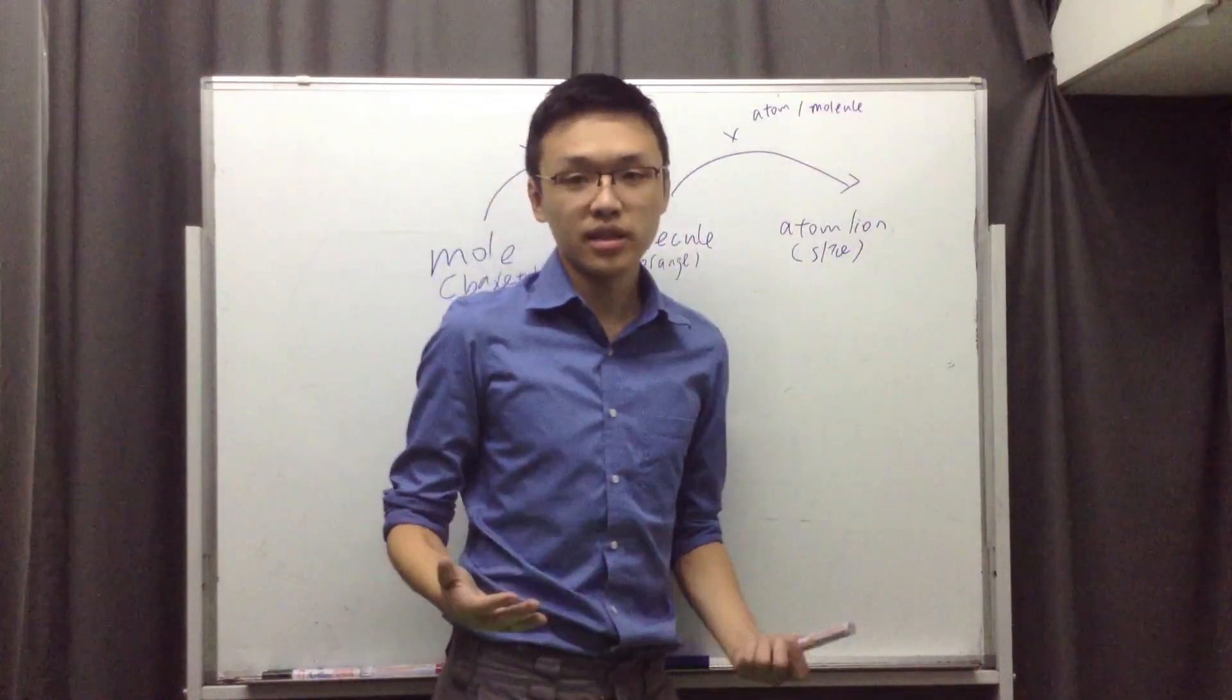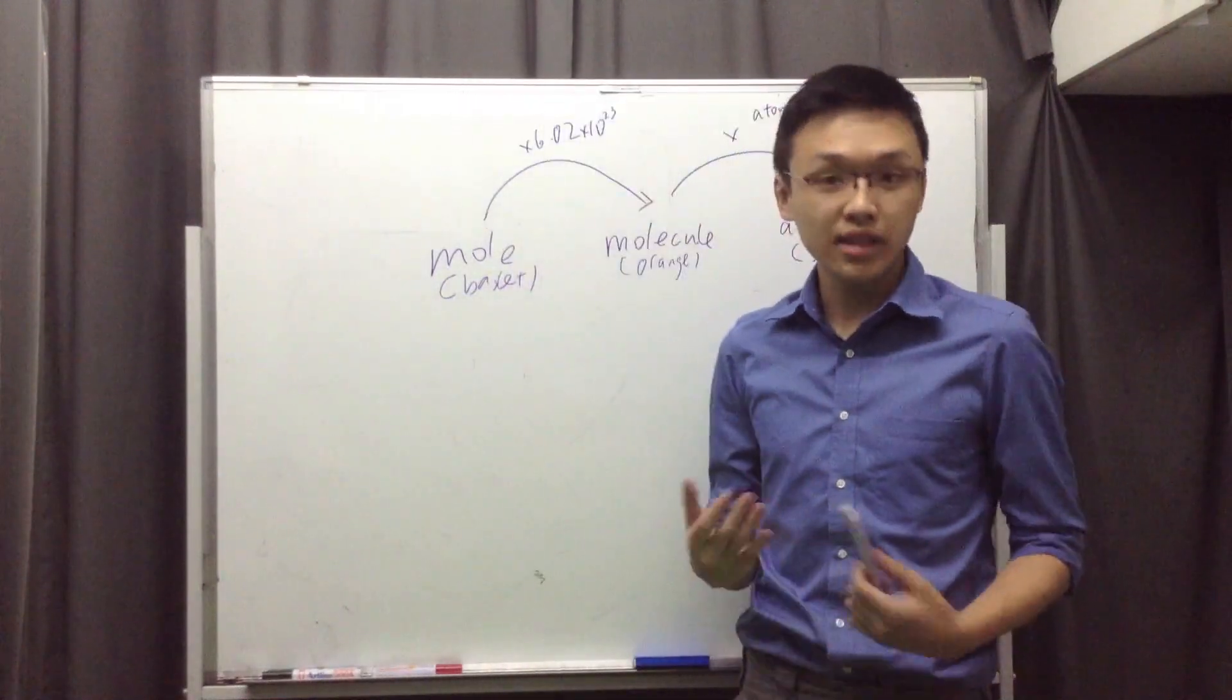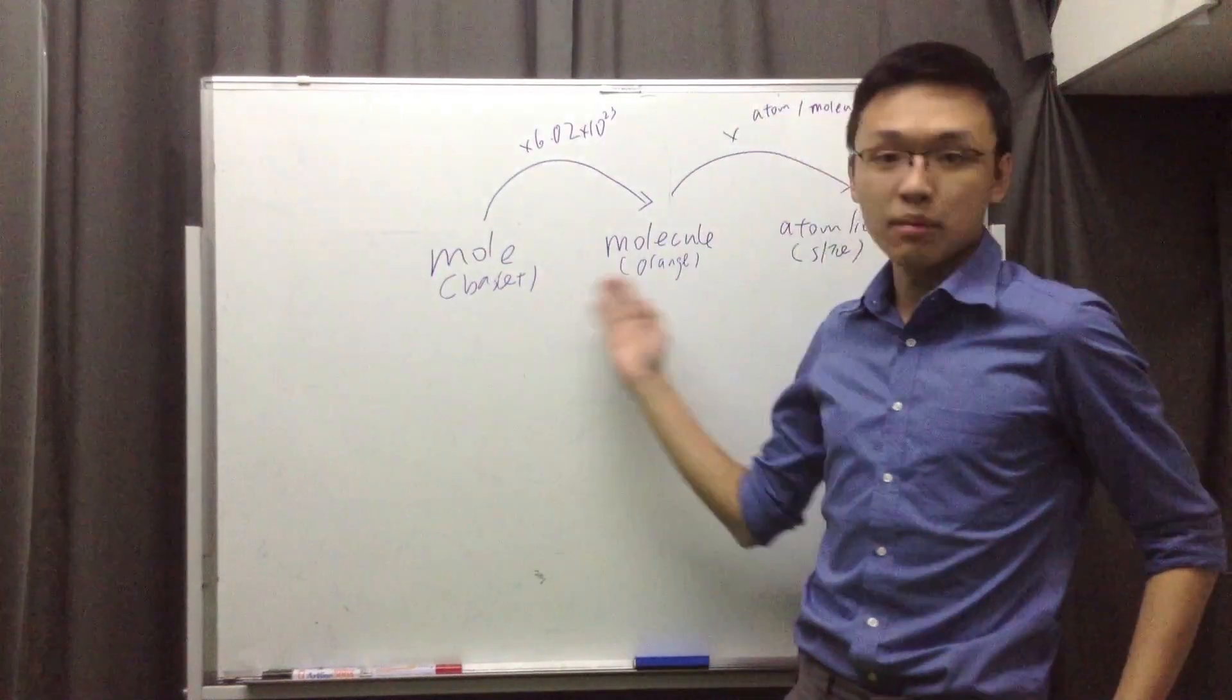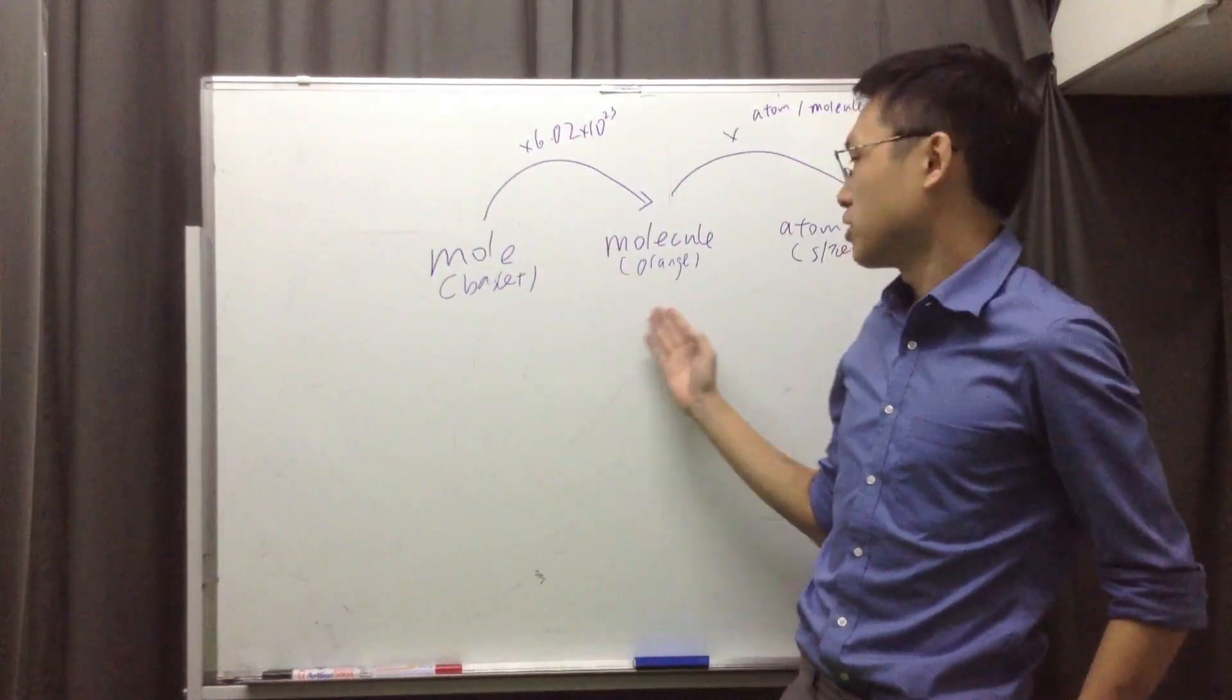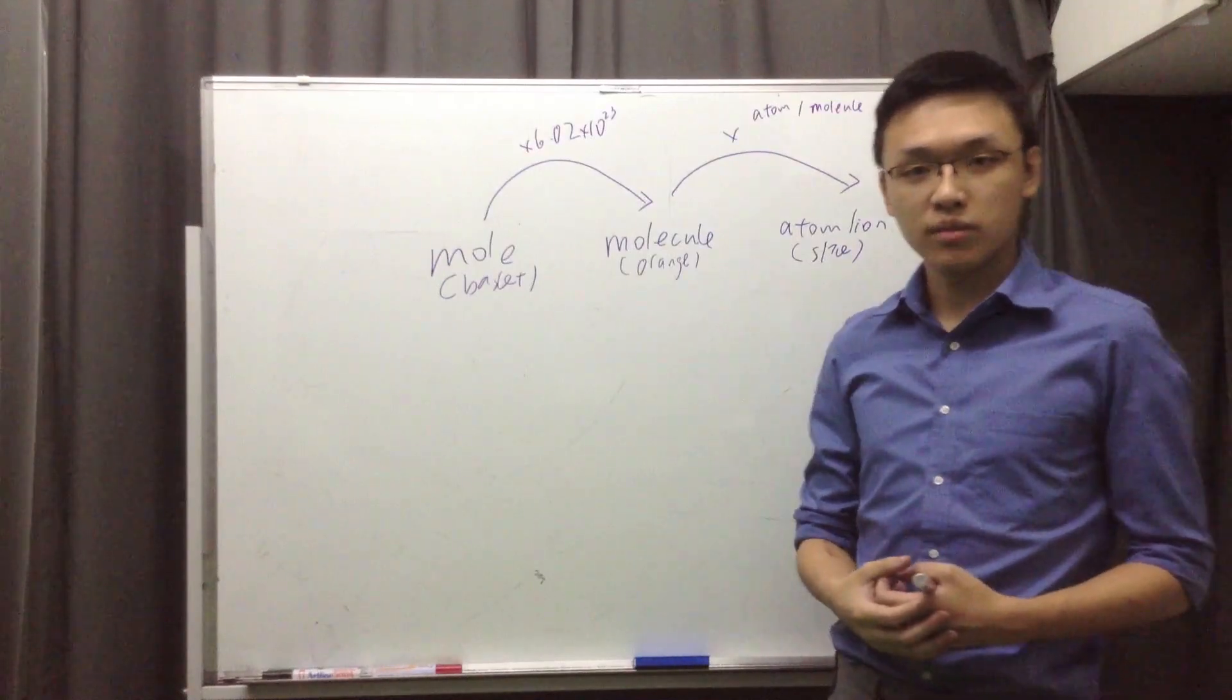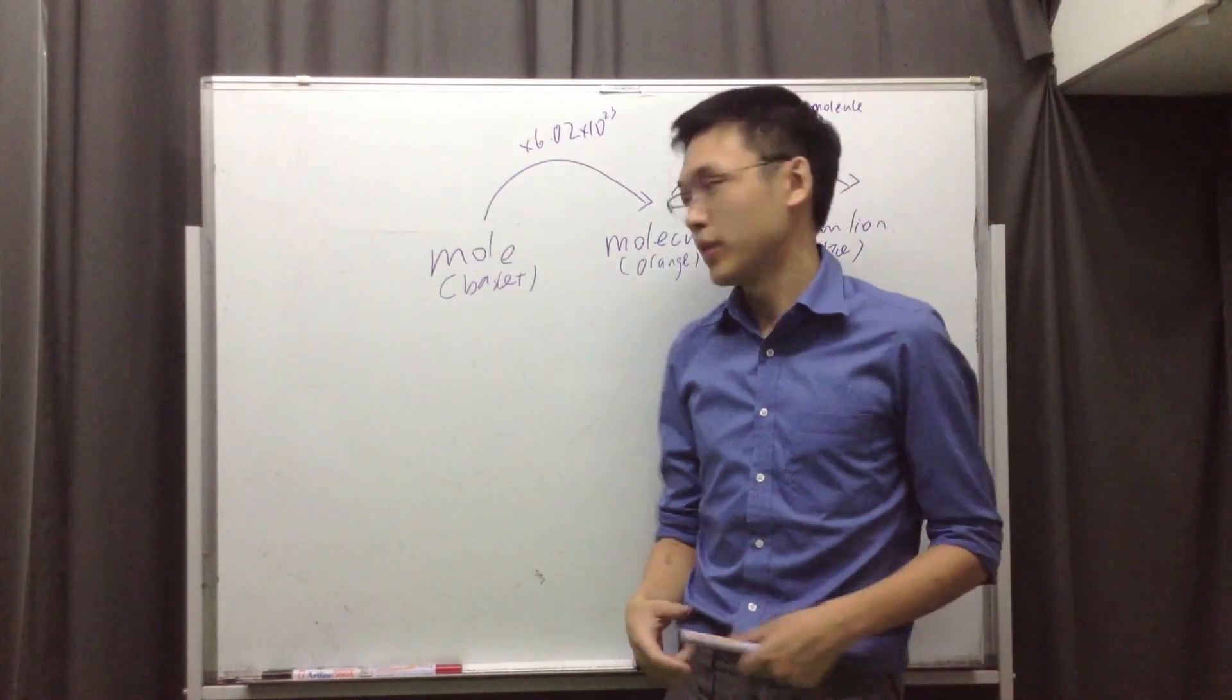So if I ask you how many slices of orange are in three baskets, well, first of all, you need to find how many oranges there are. Then, multiply by the number of slices in each orange. That makes a lot of sense, right? Just like what you do in the unit conversion in chemistry.